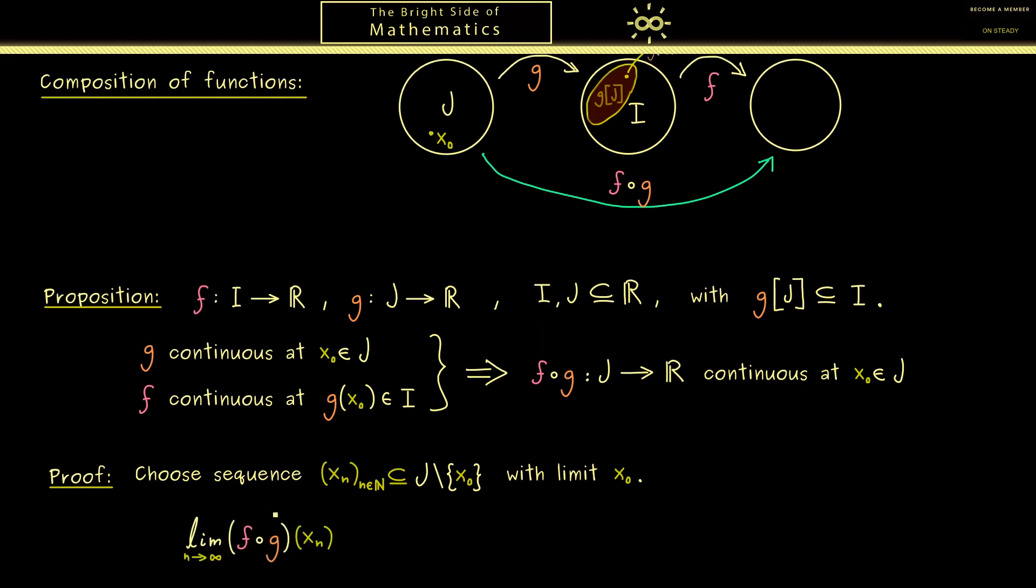And now we consider the limit of the values of xn under the composition f after g. Next we show that this exists and is exactly f after g of x0. First let's use the definition of the composition so we put g xn into f.